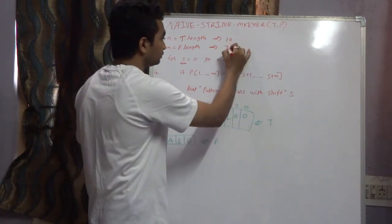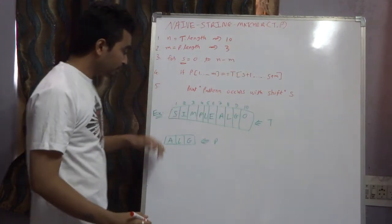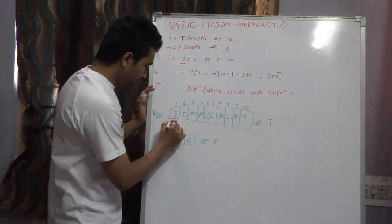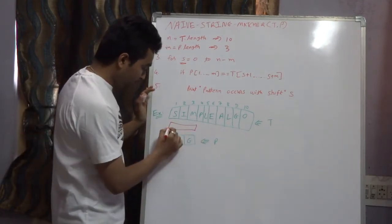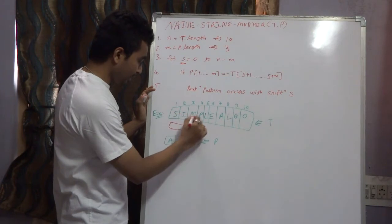We start comparing pattern from position one. Here you can see the text is SIM and the pattern is ALG. Obviously it's not matching, so at S equals 1 the pattern doesn't occur.